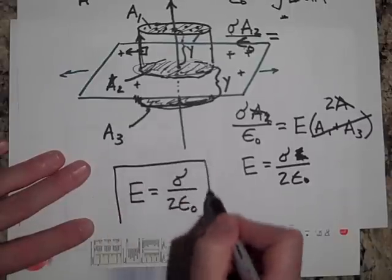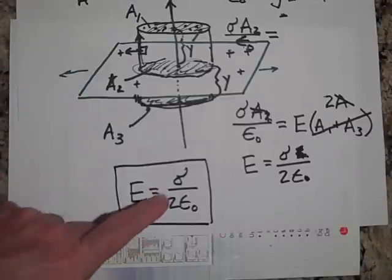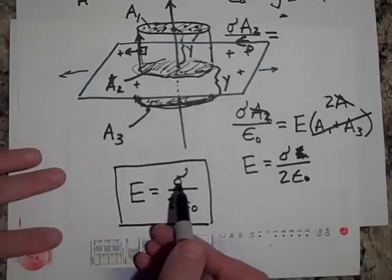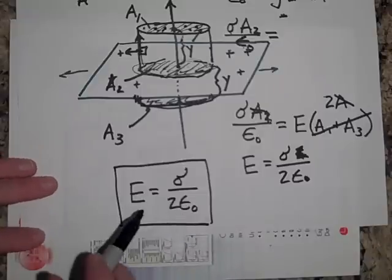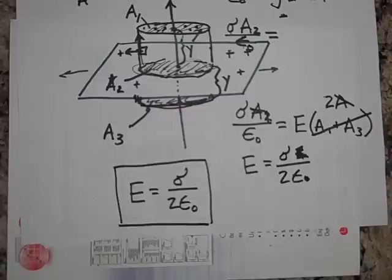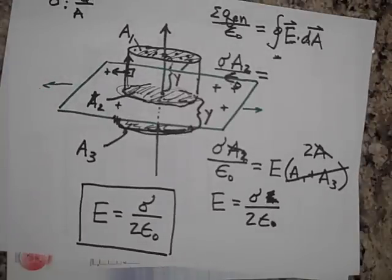Now notice something here. Notice that it's not dependent on how high above you are from the plane. There's no variables in here. It's just sigma, the surface charge density, and epsilon naught is just a constant. So the electric field above a plane is the same everywhere. And I just want to make a point about why that should be the case if you have an infinite plane.